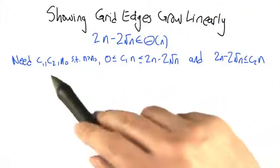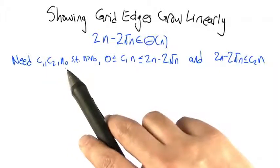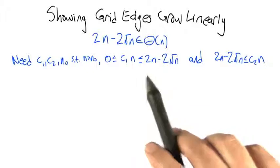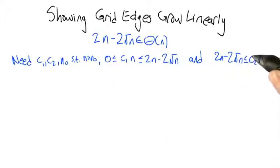So the game plan is that we need to find constants c1 and c2 bigger than 0 and a threshold n0, so that for all n bigger than n0, the function that we care about is sandwiched between these two scalings. Let's focus on this one first. What c2 can we plug in here so that we're guaranteed that this will be above this expression?